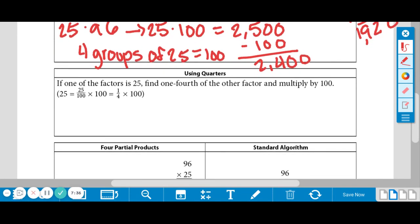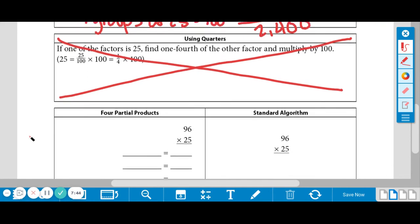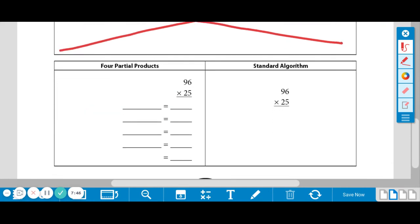Okay. The next strategy is using quarters and we are actually not going to cover that. So you don't need to write that down. We're going to skip to partial products. So your next subtitle is partial products.